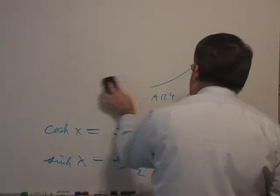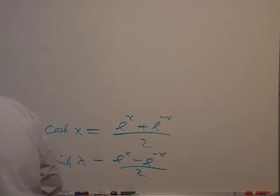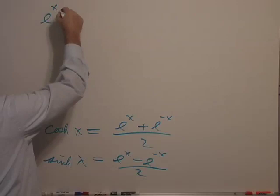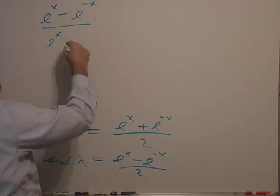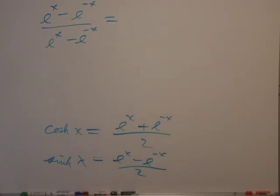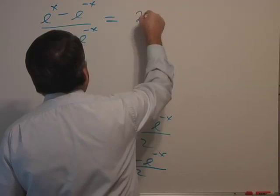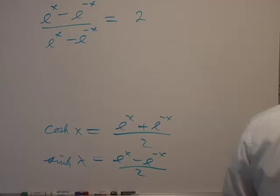So in the book they'll give you some interesting problems. Let me make up one. Let's call it e to the x minus e to the minus x over e to the x plus e to the minus x equals, let's say this equals 2. And we're going to solve for x. So how in the world would you approach that?